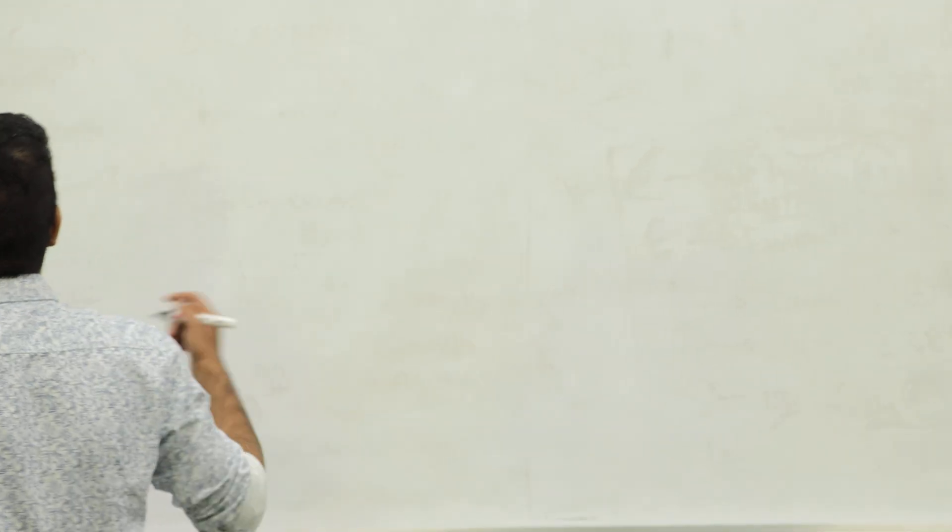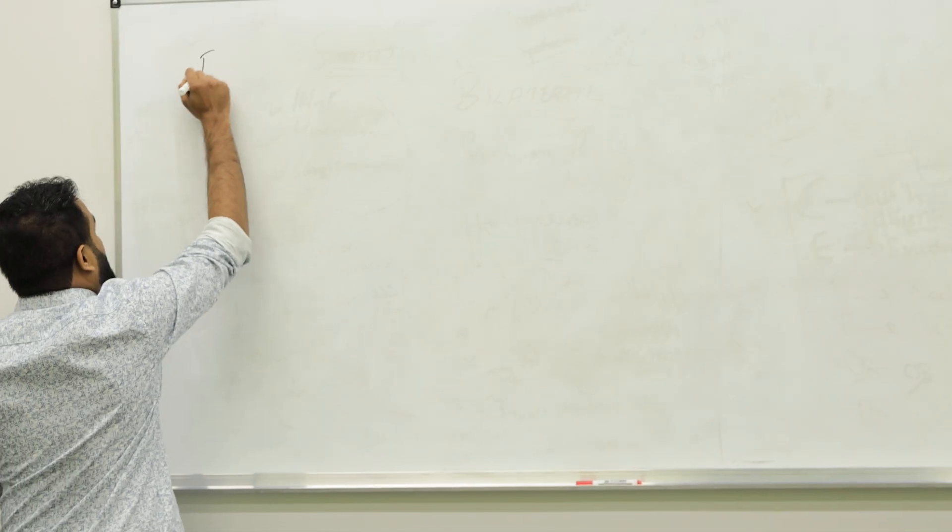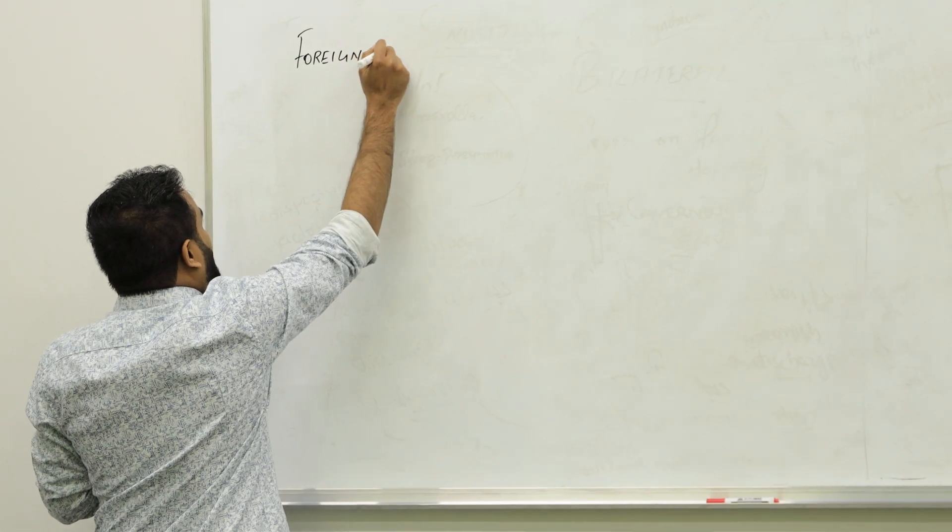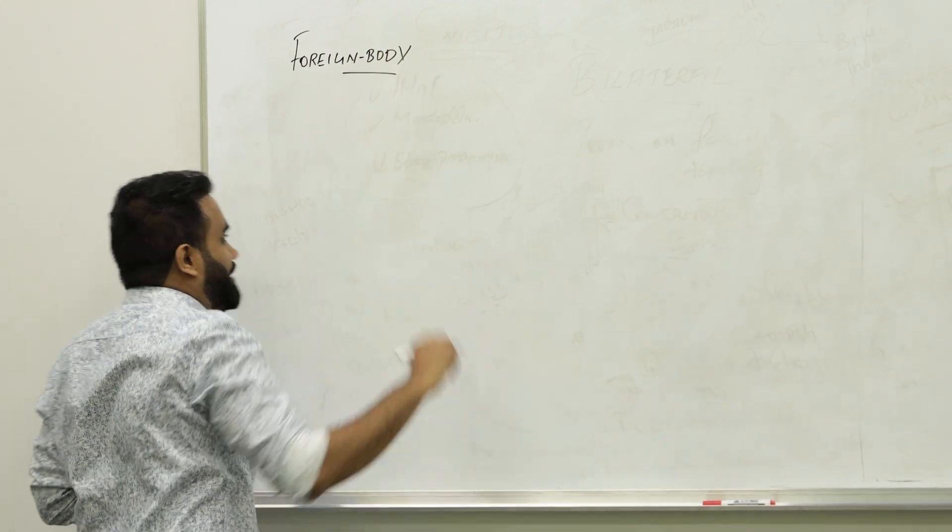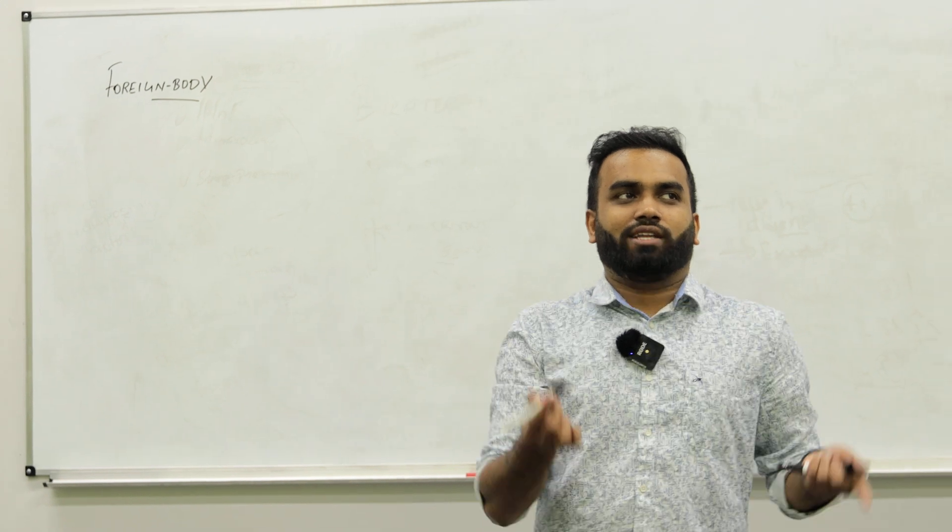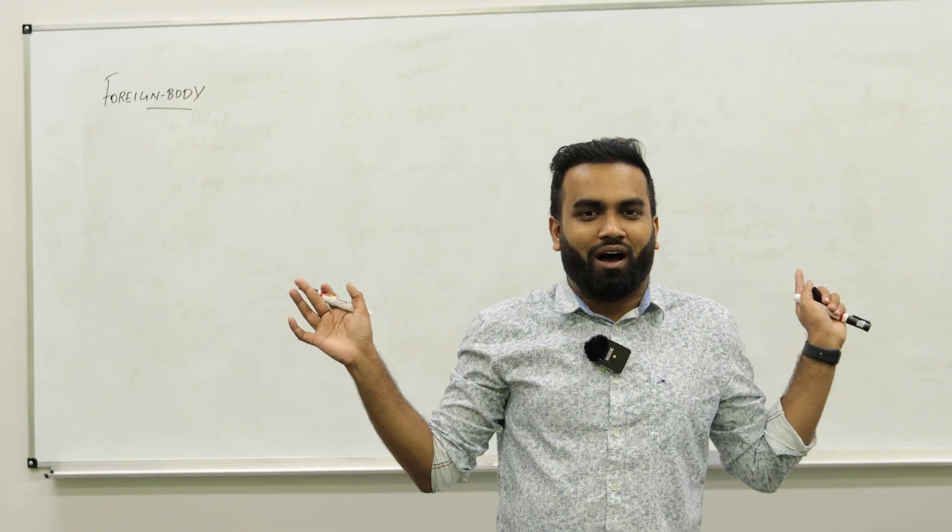So dears, next one, let's talk about foreign body. Mainly occurs in children. If you keep a child with anything - a toy or a pen or something - if you come back after some time, the pen will be in the nose or ear, in the vagina, in the mouth, in the lungs.